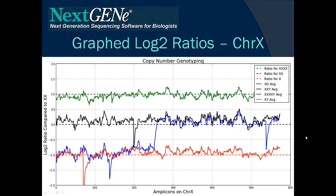Here we can see the results for chromosome X. The control sample that all of these replicates were compared to was a female sample, so anything with a ratio near 0 would be an XX genotype, a ratio near negative 1 would be an X genotype, and a ratio near 1 would be a 4X genotype. The XXY genotype sample, as expected, has a ratio near 0. The male XY sample has a ratio near negative 1, since there's only one X chromosome. The 4X sample has a ratio near 1, because there's 2 times the coverage of the control sample for the X chromosome.